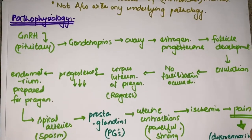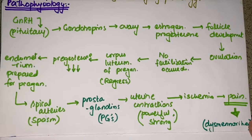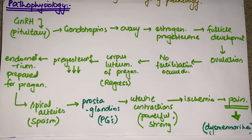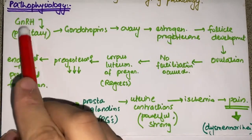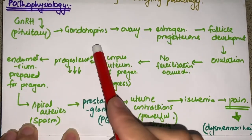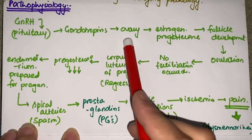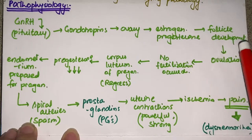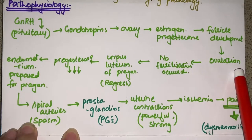Now we understand what primary dysmenorrhea is, but how does it develop? Let's discuss its pathophysiology. Recall the hypothalamic-pituitary axis: the hypothalamus releases GnRH, which acts on the anterior pituitary, which releases gonadotropins. These gonadotropins act on the ovary, which produces estrogen and progesterone, leading to follicle development and ultimately ovulation.